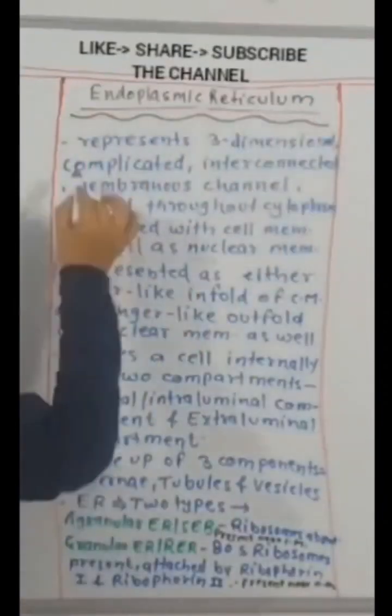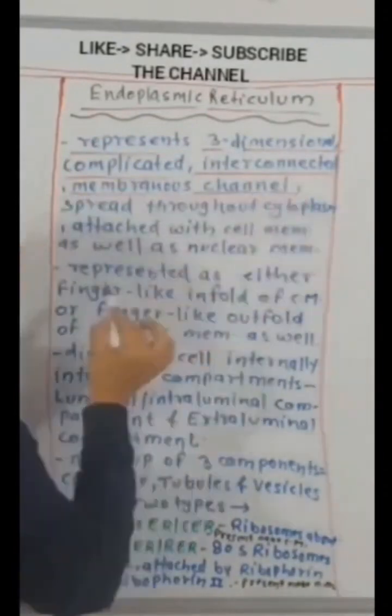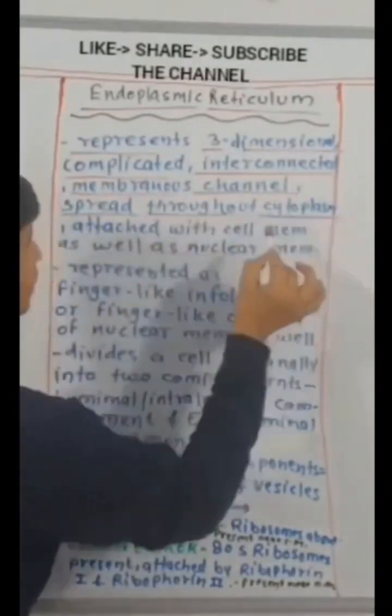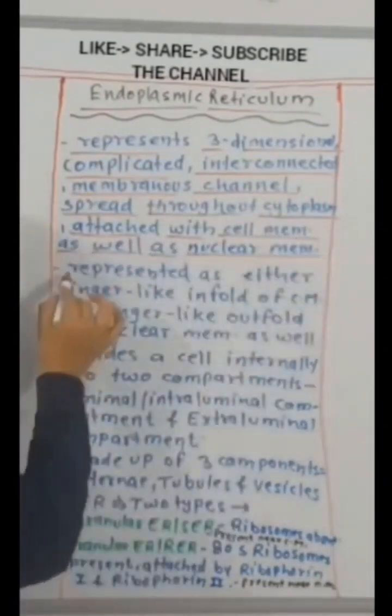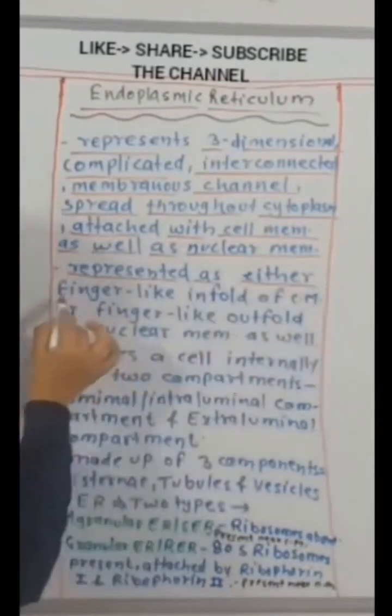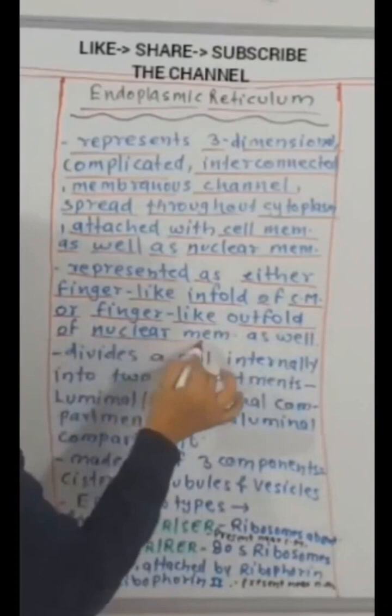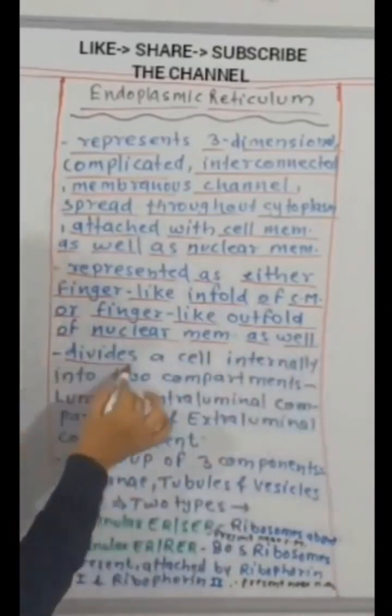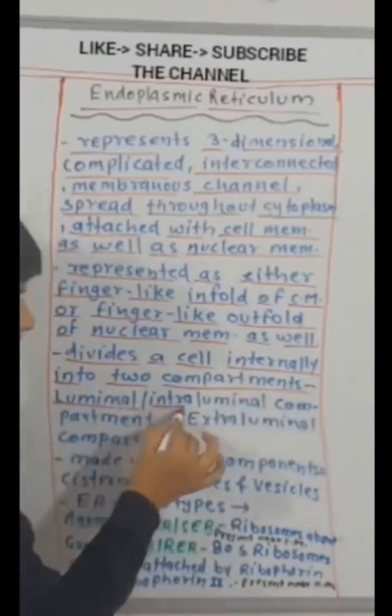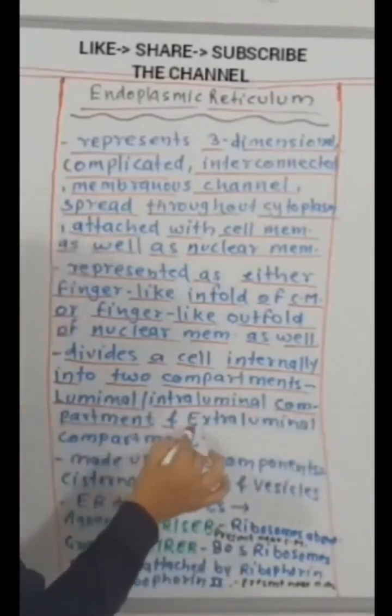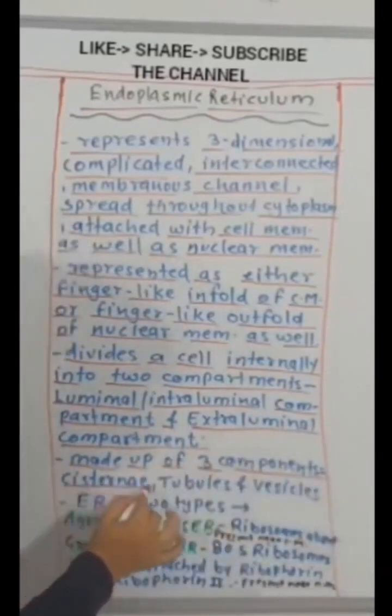Endoplasmic reticulum represents three-dimensional complicated interconnected membrane channel spread throughout cytoplasm. Attached with cell membrane as well as nuclear membrane. Represented as either finger-like infold of cell membrane or finger-like outfold of nuclear membrane. Divides a cell internally into two compartments: luminal, intraluminal compartment and extraluminal compartment. Made up of three components: cisternae, tubules and vesicles.